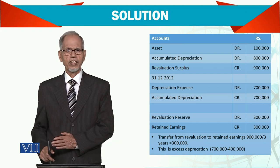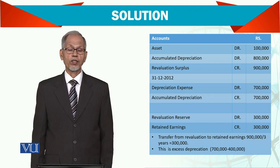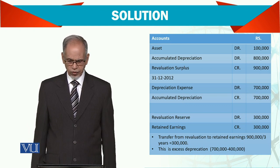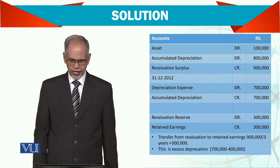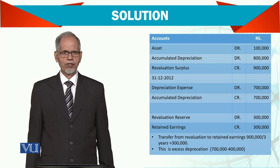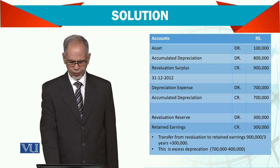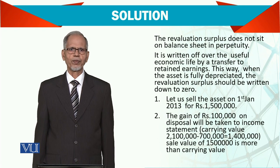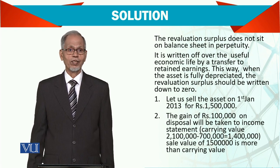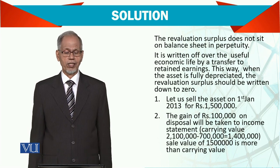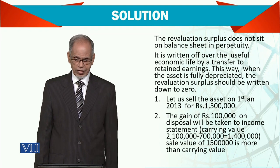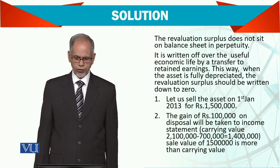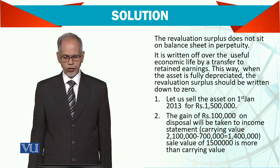Ultimately profit goes to retained earnings, so we are straight away crediting retained earnings. In this particular year we adjust through retained earnings. The transfer from revaluation reserve to retained earnings is simply the excess depreciation of 700,000 minus 400,000, which is 300,000. The revaluation surplus should not sit on the balance sheet in perpetuity. We had 900,000 and reversed 300,000, so there is still 600,000 remaining, which is written off over the useful economic life by transfer to retained earnings.